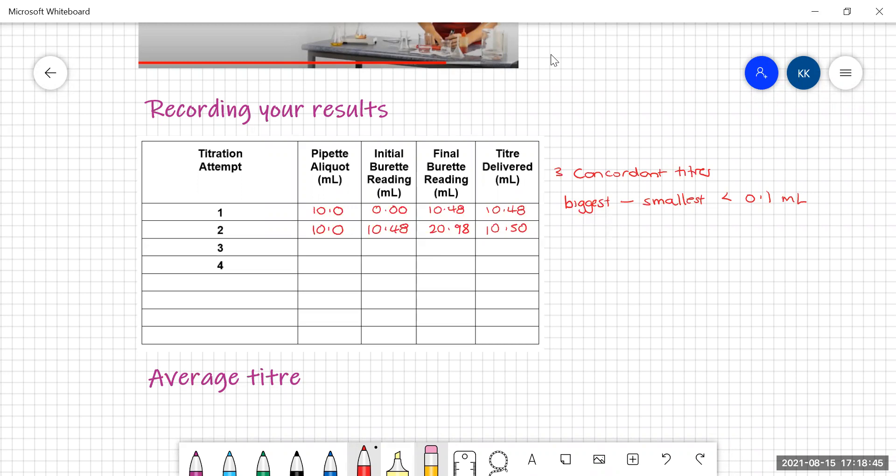So this time, my pipette volume is still 10. I have a starting at 20.98. And this time I am titrating. The indicator goes a peach color and my final volume is 31.59. So to work out my titer then, my titer is 10.61.